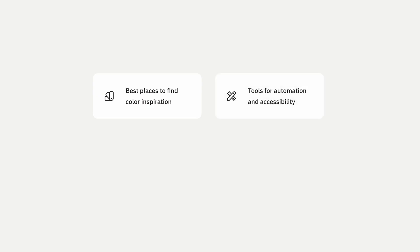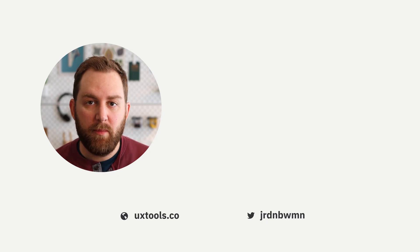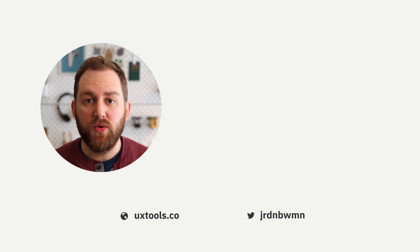If you want to dig really deep into colors, we're making a product designer's field guide for colors. It's got places to find color inspiration, recommendations for tools for automating some of the shading process or checking color contrast for accessibility, a tutorial on how to make dark modes, tips for handing off to developers, and a Figma file with example color palettes. You can go to uxtools.co/shop/color to learn more. I hope this tutorial helps — feel free to come back anytime you need to make another UI color palette, and share in the comments if you have any other tips for working with color. Next you can watch a video where I critique a real app page including color and do a little redesign.